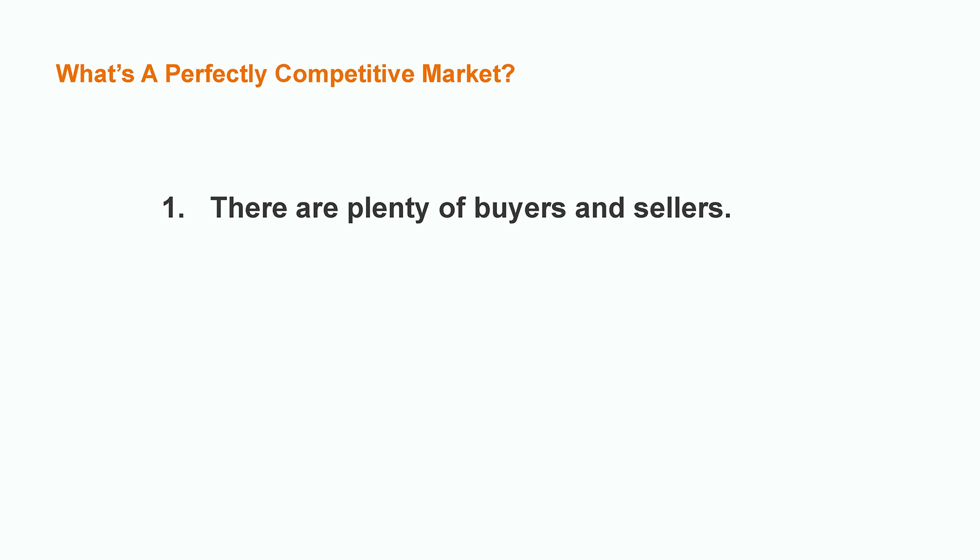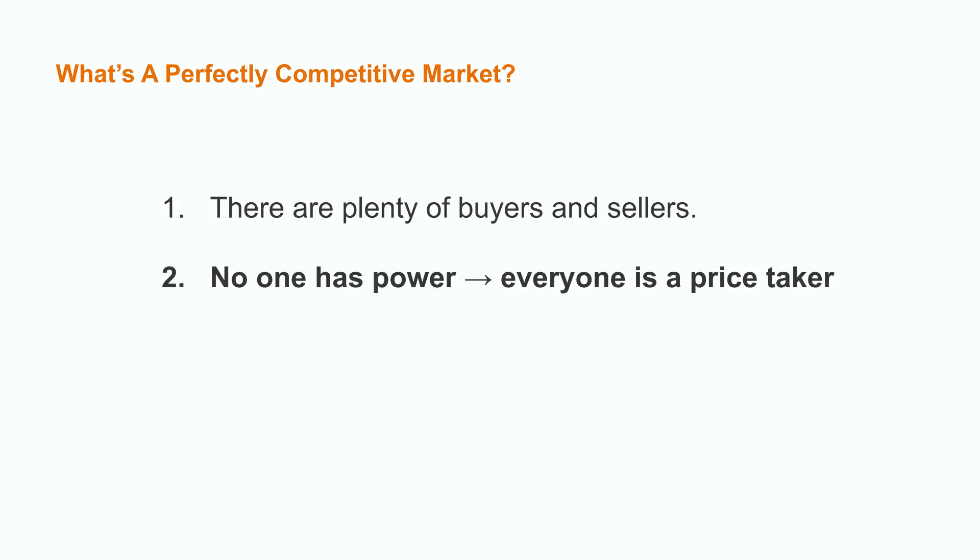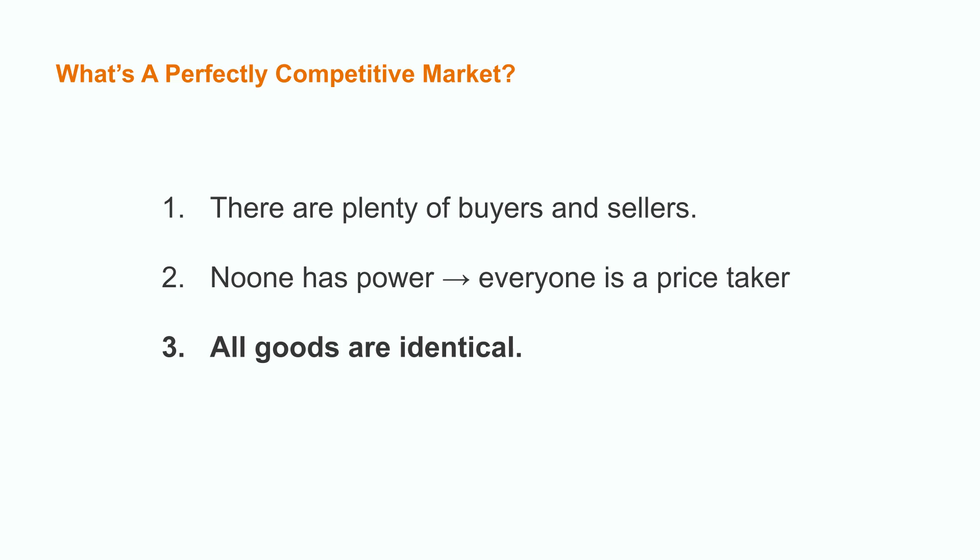What does this mean? First of all, it means there are plenty of buyers and sellers, meaning that one individual consumer or producer will not generate significant changes in the market with its own behavior. This implies that firms can freely enter and exit the market. It also means that no one has power in this market, so all buyers and sellers are price takers — they do not have enough influence to change price or market conditions. Also, all goods are identical or homogeneous, which means the sellers produce the same product, so there is no distinctive feature in the products that generates influence among buyers.